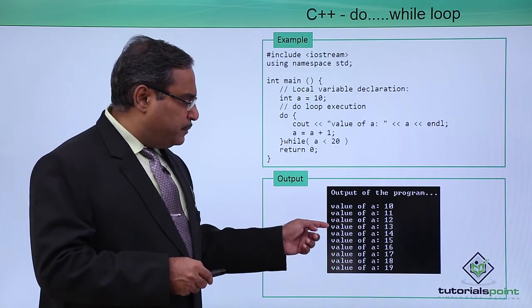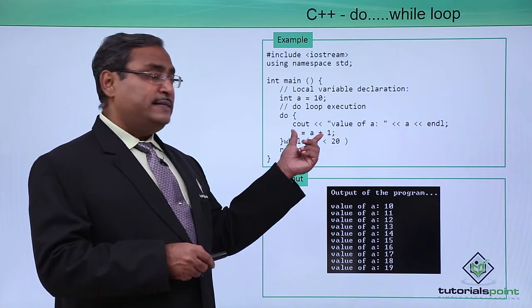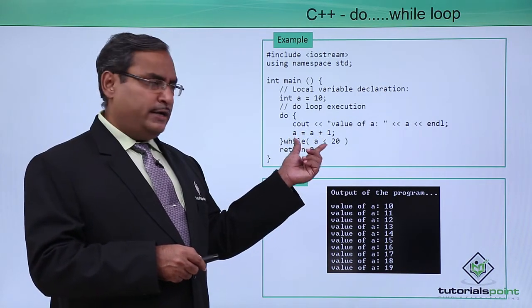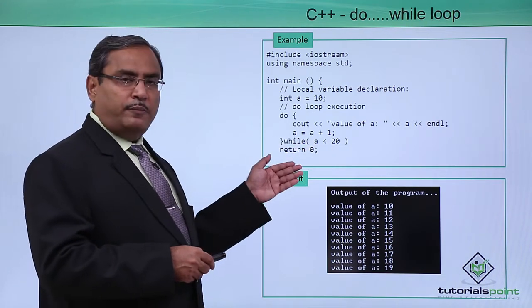Here is the respective output. When the value of a will become 19, then a equals a plus 1 will make that one 20, then 20 less than 20, the condition will be false. It will come out from the loop. That is why we could print for a equals 10 to 19.